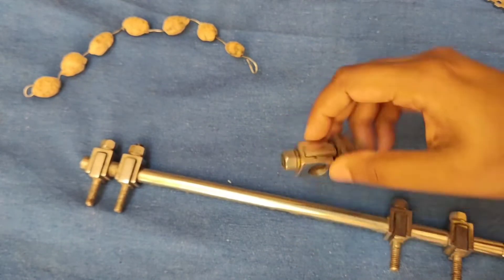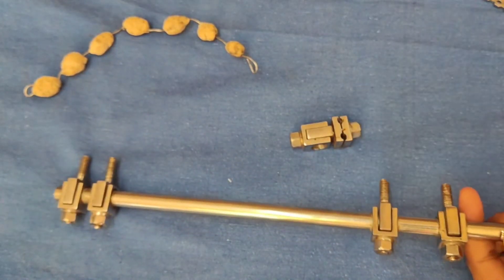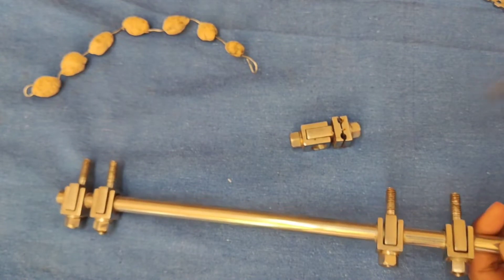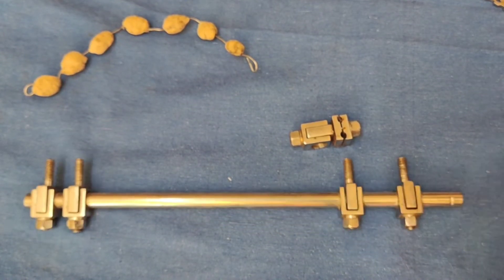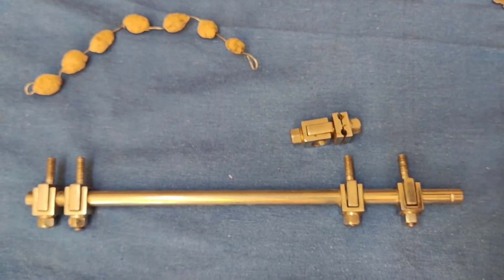In case of temporary fixation, after placing the external fixator, we can give IV antibiotics and let the soft tissue to heal and wait for 2 to 4 weeks. After removing the pins and if pin sites are clean, we can convert the external fixation into an intramedullary nailing or a plating.